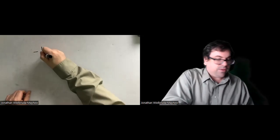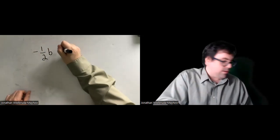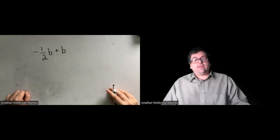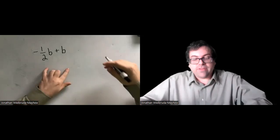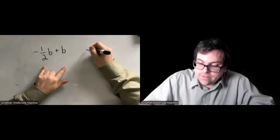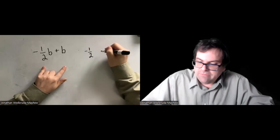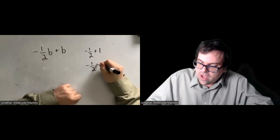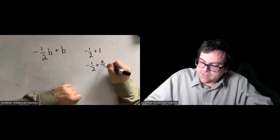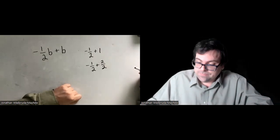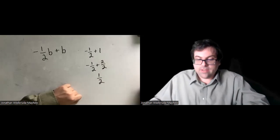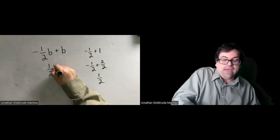Negative 1.5b plus b — these are like terms. We have minus 1.5 of them plus 1 of them. Negative 1.5 plus 2 over 2: negative 1 plus 2 is positive 1, so we end up with 0.5b — that is 1/2 b.